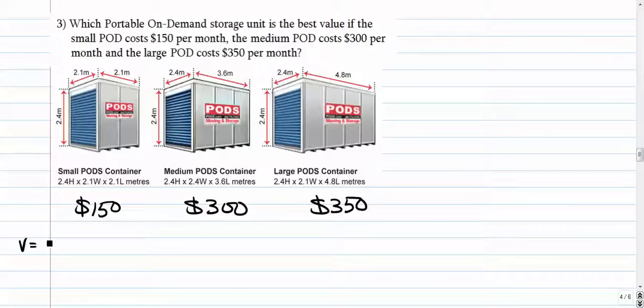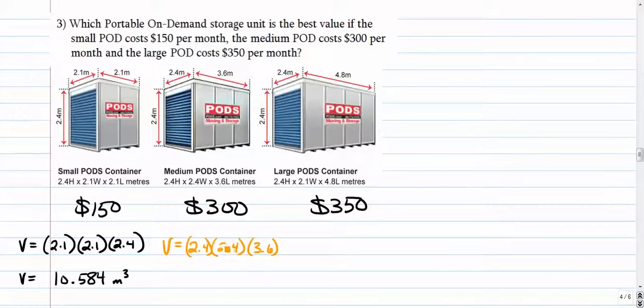And then we'll do a simple ratio. So here we go. The volume of the first one is, let's see, 2.1 times 2.1 times 2.4. So if we type that in, 2.1 squared times 2.4, we get 10.584 cubic meters. The middle one is, let's see, it's 2.4 times 2.4 times 3.6.